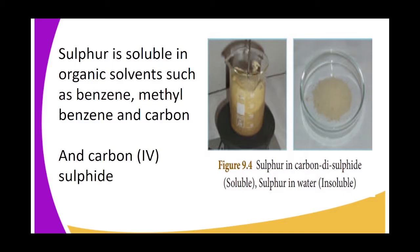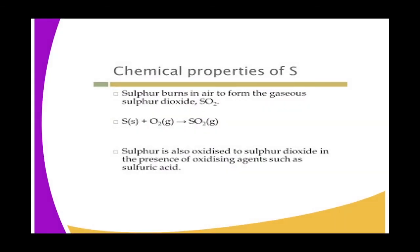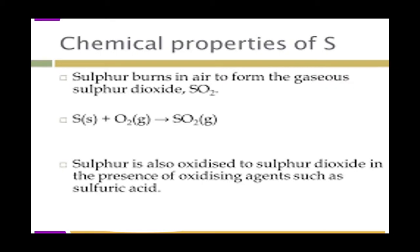Now we look at the chemical properties of sulfur. Sulfur burns in oxygen with a bright blue flame, forming misty fumes with a choking smell. The gas that chokes is sulfur dioxide (SO₂), which has traces of sulfur trioxide (SO₃). The gas turns blue litmus paper red, indicating that the oxides of sulfur are acidic.